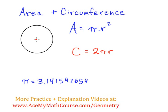So let's say, for example, that this circle right here has a radius of 5 feet.